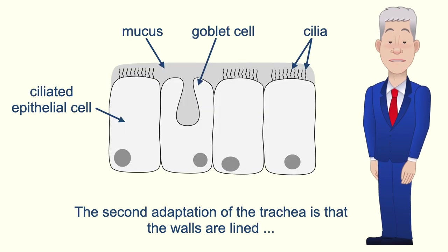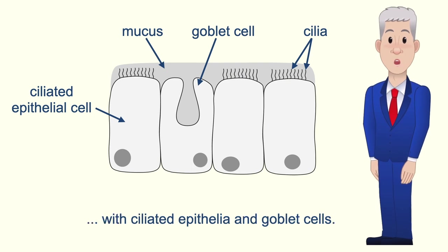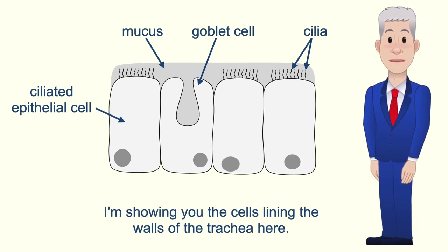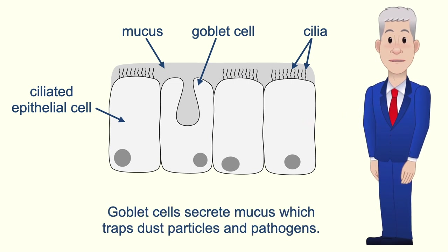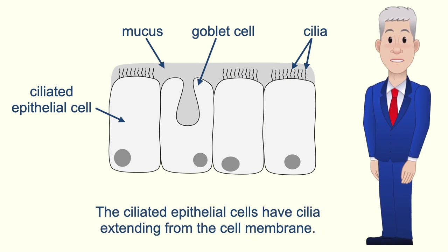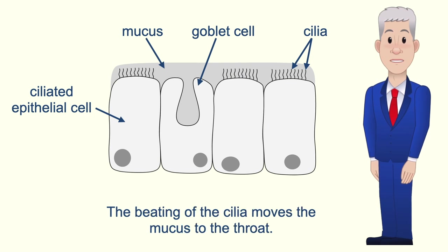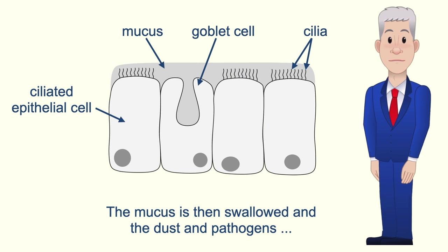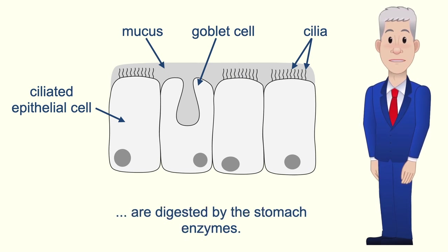The second adaptation of the trachea is that the walls are lined with ciliated epithelia and goblet cells. Goblet cells secrete mucus which traps dust particles and pathogens. The ciliated epithelial cells have cilia extending from the cell membrane, and the beating of the cilia moves the mucus to the throat. The mucus is then swallowed and the dust and pathogens are digested by the stomach enzymes.